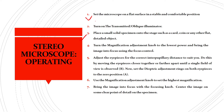Place a small solid specimen onto the stage, such as a card, coin, or any flat detailed object, and fix it using the stage clips. Then turn the magnification adjustment knob to the lowest power and bring the image into focus using the focus control. After that, adjust the eyepieces for the correct interpupillary distance to suit your eyes.